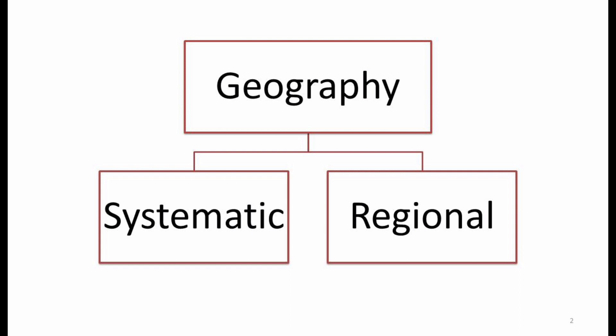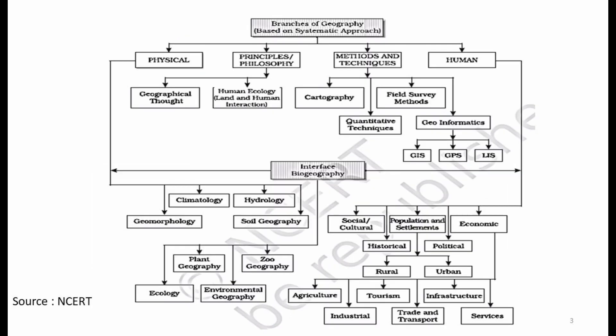Both systematic and regional approaches are vast, with several subdivisions each. Systematic geography is divided into four subdivisions: first, physical geography; second, principles and philosophy; third, methods and techniques; and fourth, human geography. Physical geography studies the physical aspects of the Earth — land, soil, water, and air — and is further subdivided into four major parts: geomorphology, climatology, hydrology, and soil geography.